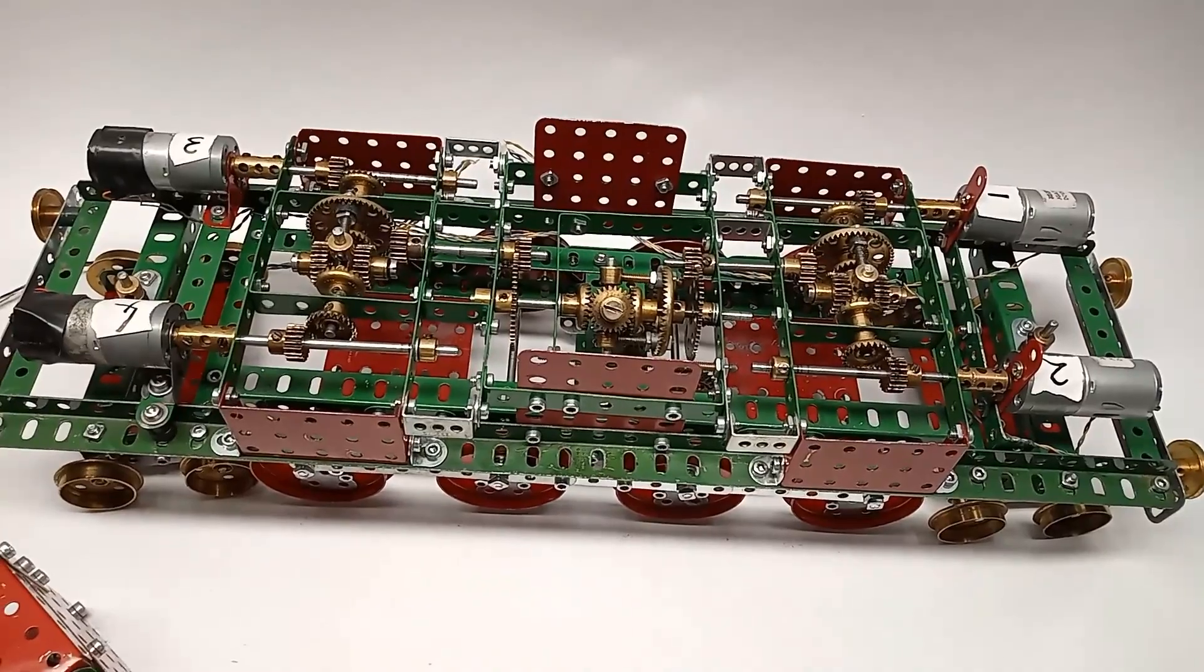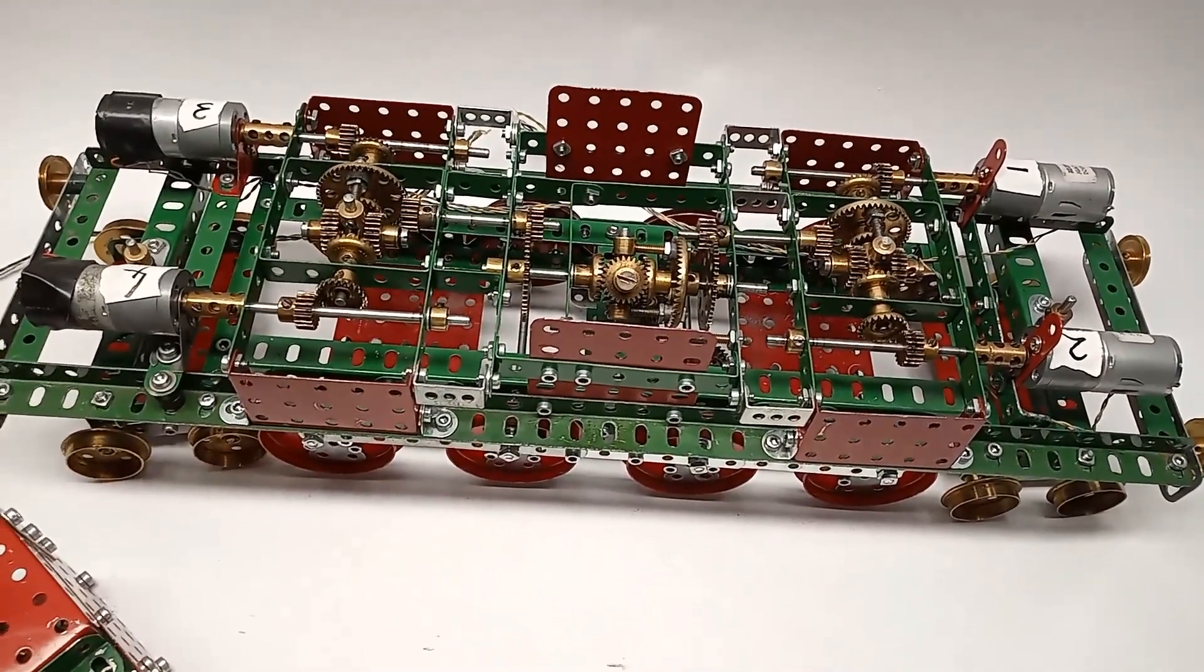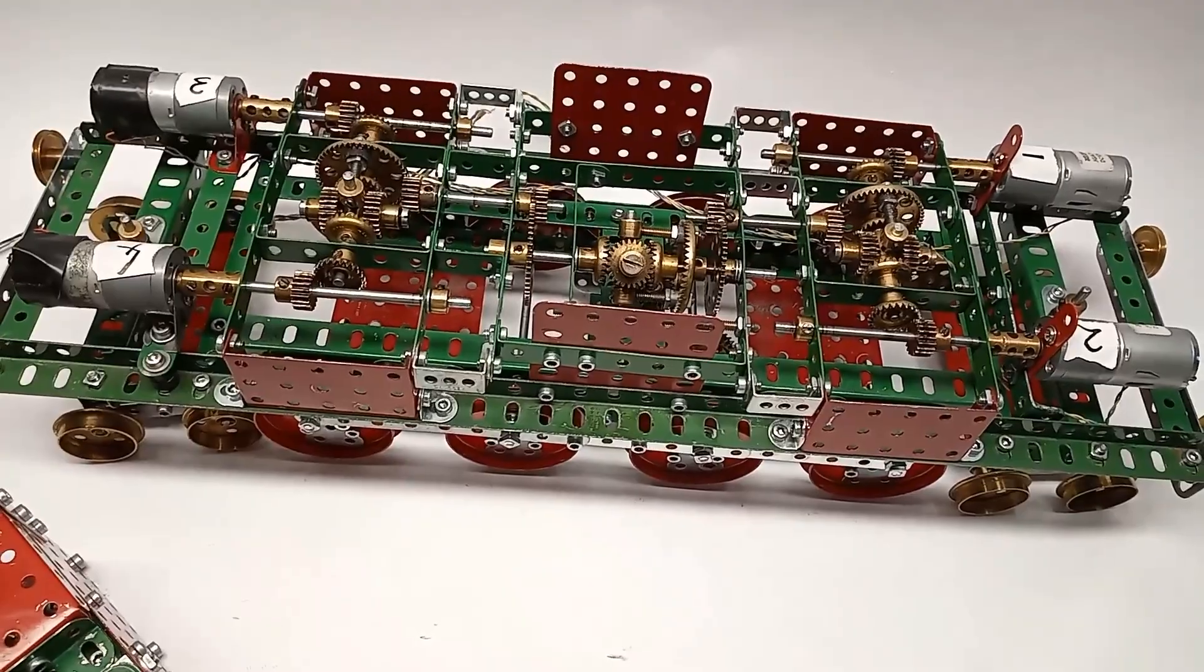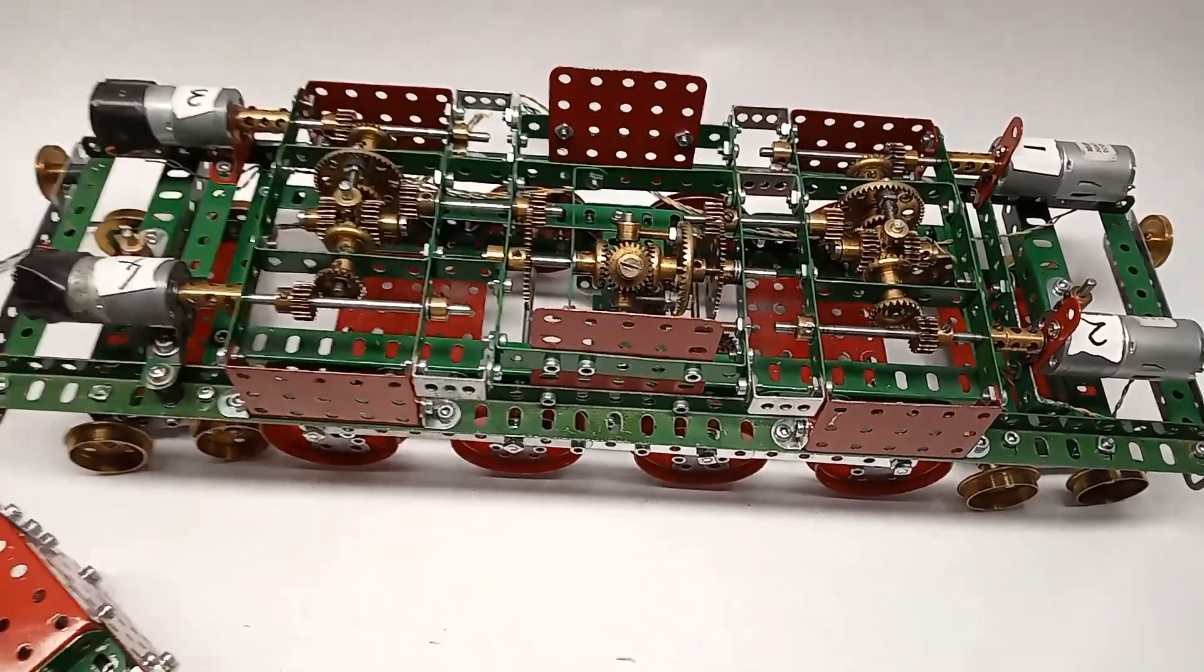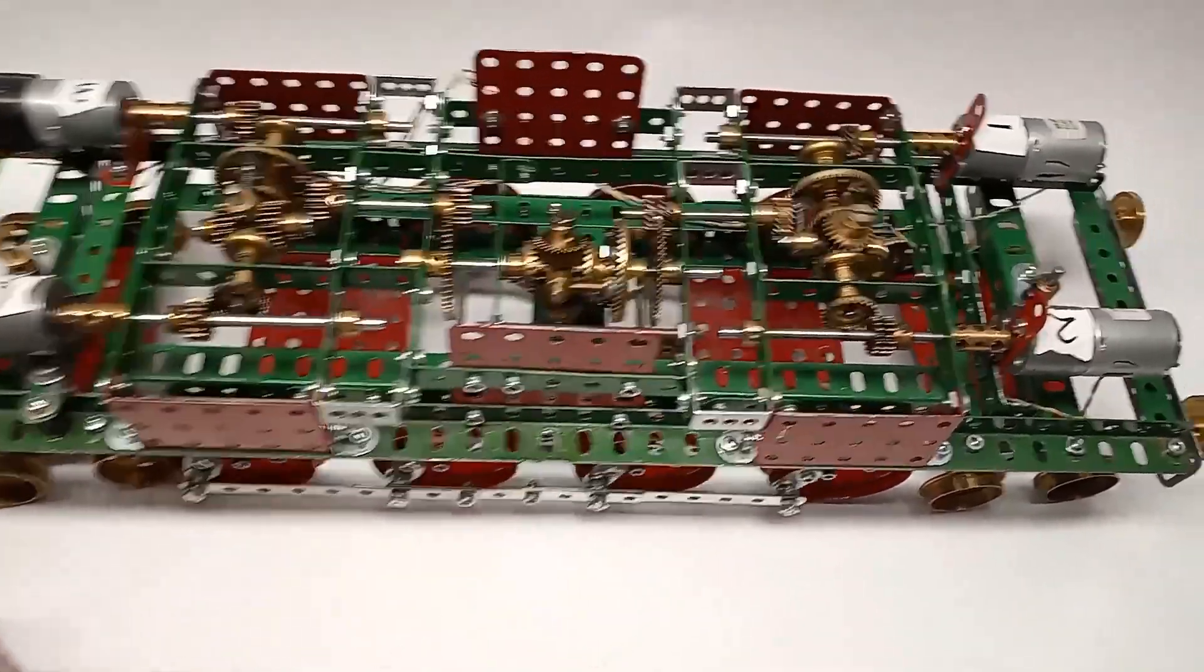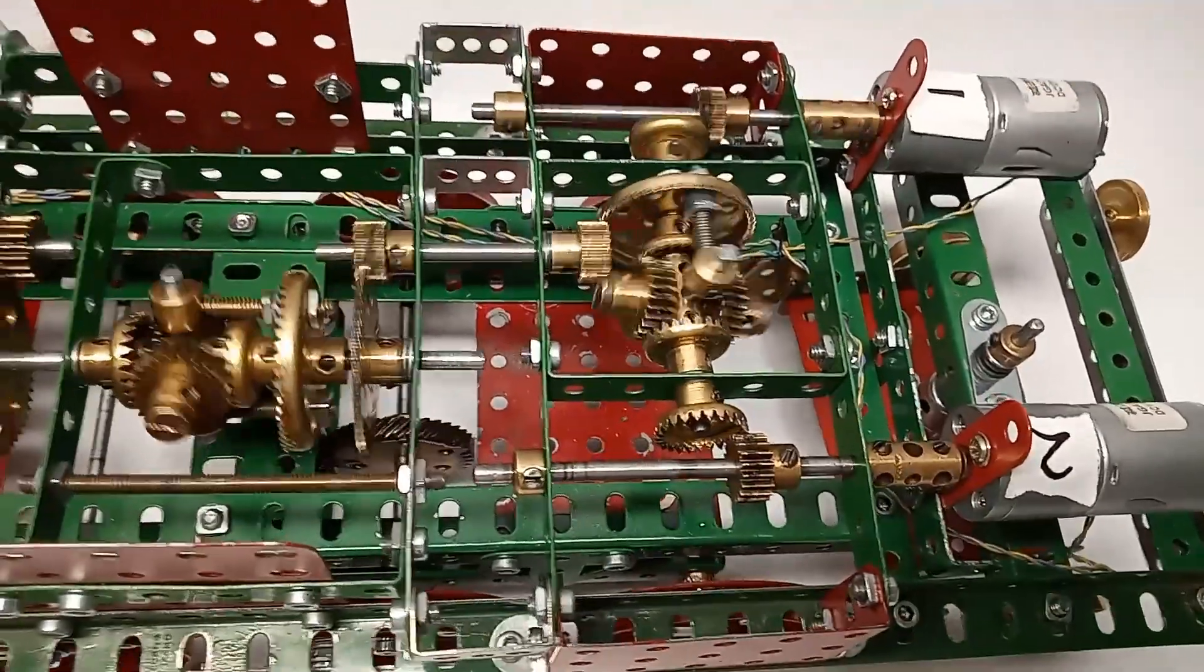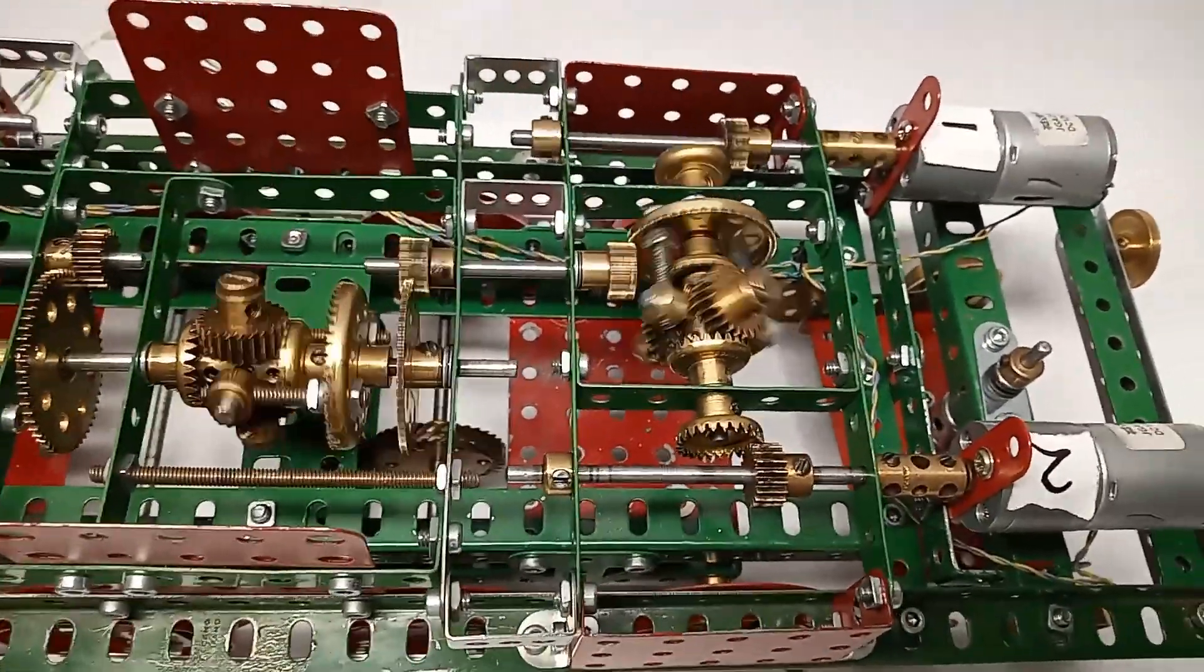Here's the locomotive in operation. Let's start with one motor. Just motor number one running. Just motor number one running gives us our lowest speed.